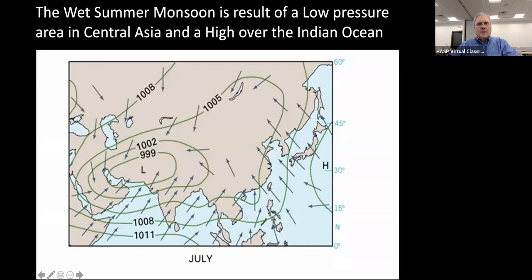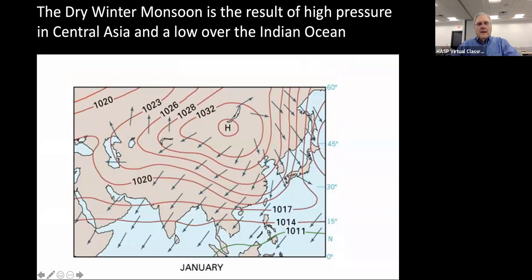In the summer, the winds are coming from the south and are attracted toward the low pressure that is in the middle of Asia, and that brings in water from the ocean. Then in the winter it turns around, because Asia becomes the high pressure area and the wind flows the other direction.